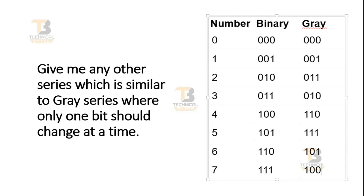Friends, the next challenge is on your screen where I have shown you three series. The first column represents a decimal number ranging from 0 to 7. The second column is binary numbers which go from 000 to 001, 010 to 011, and so on up to 111. If you give attention to this binary series, you will notice that when it changes from 3 to 4, three bits are toggling at a time.